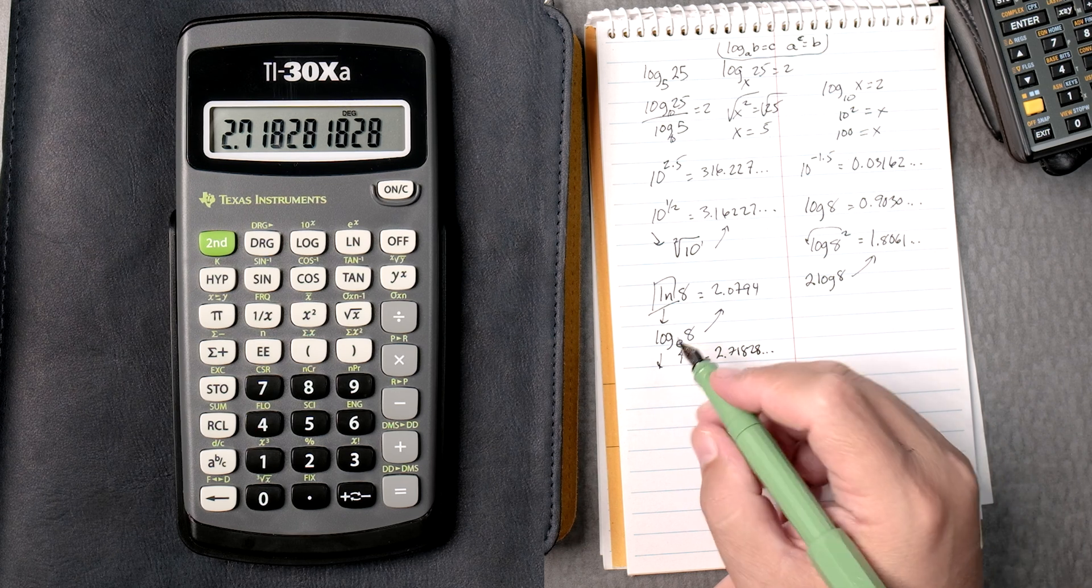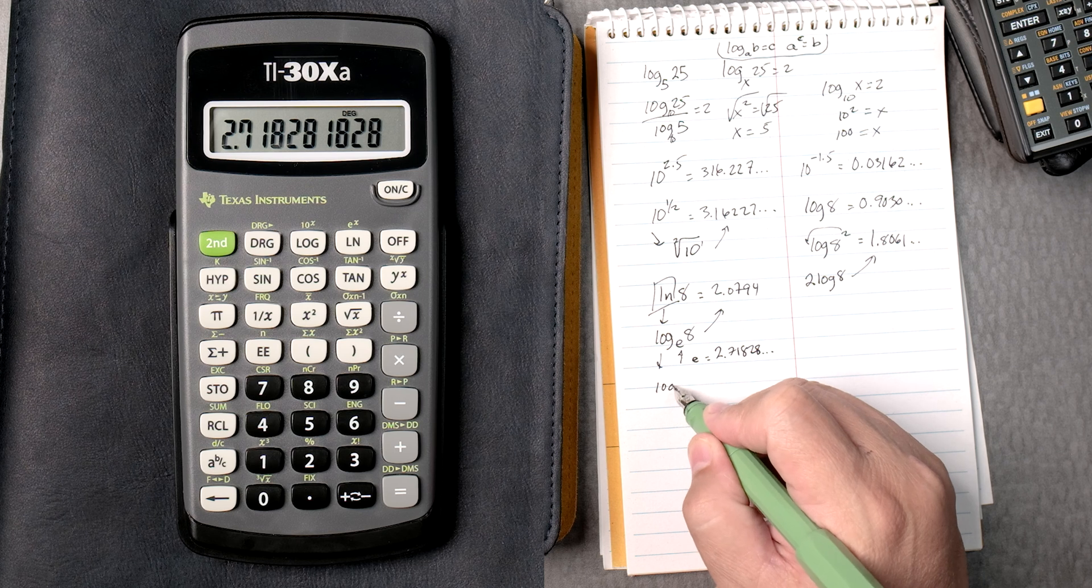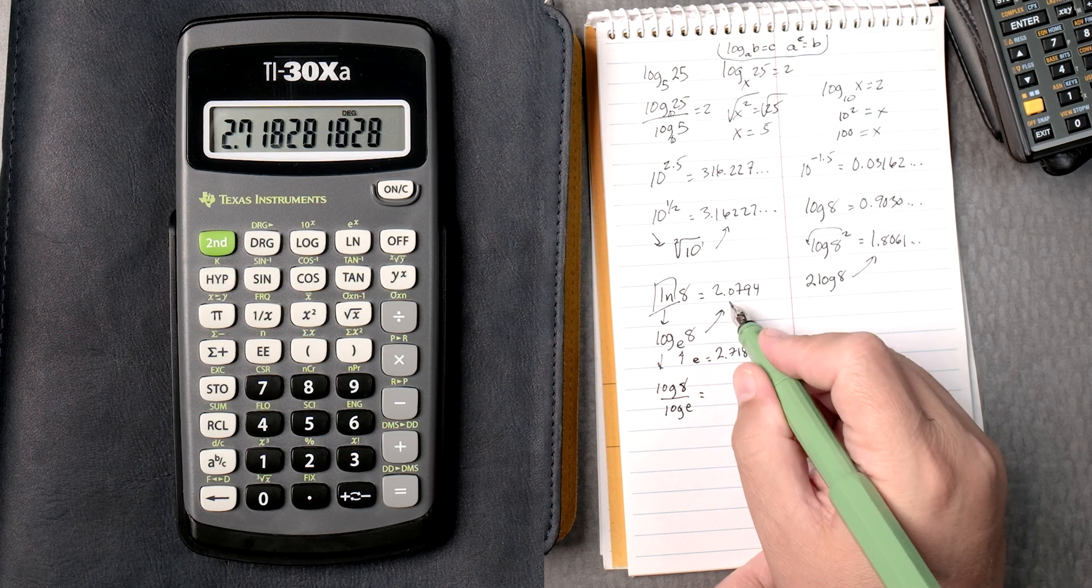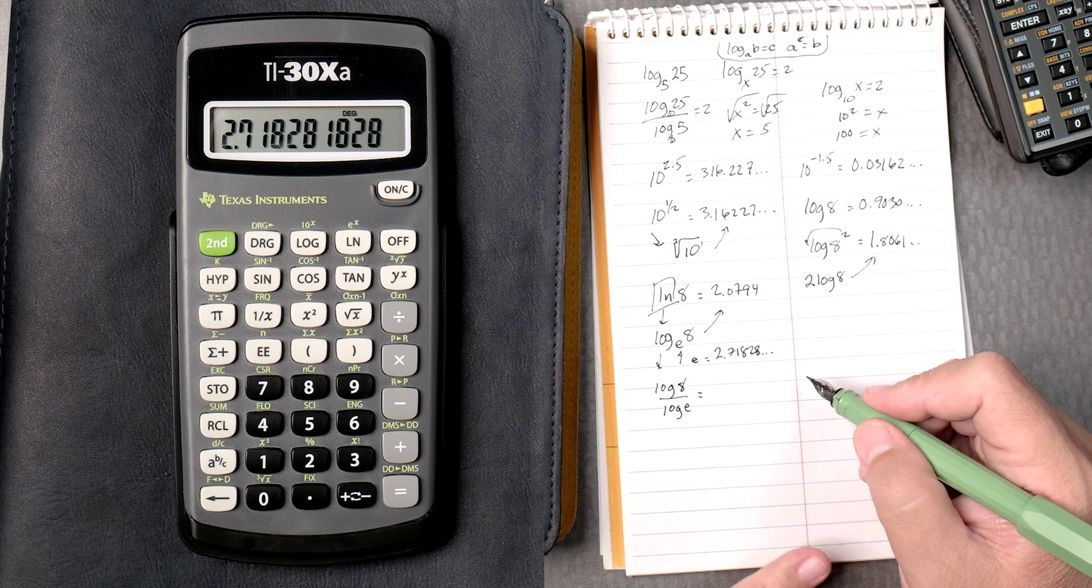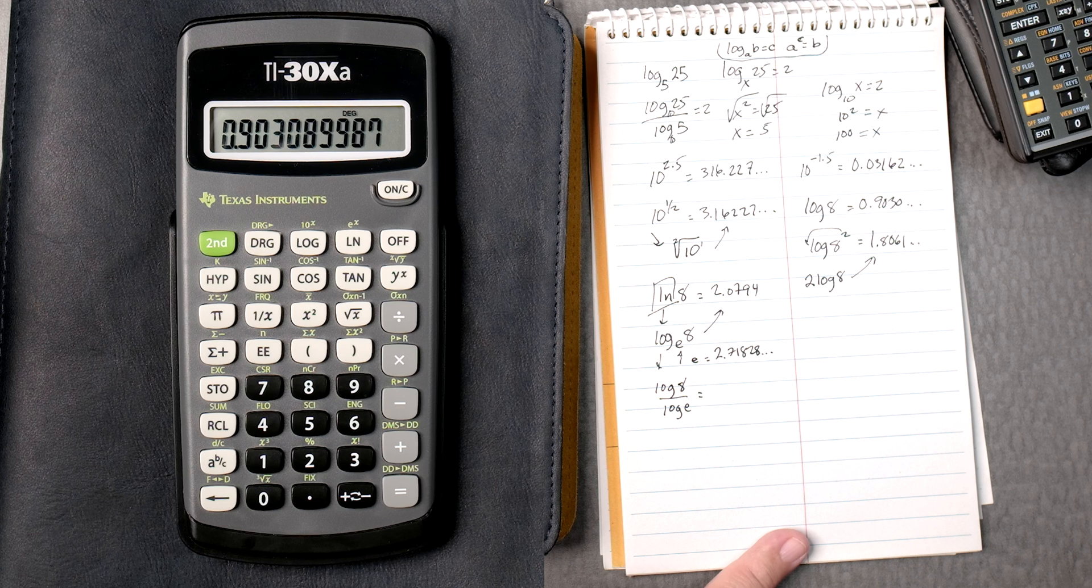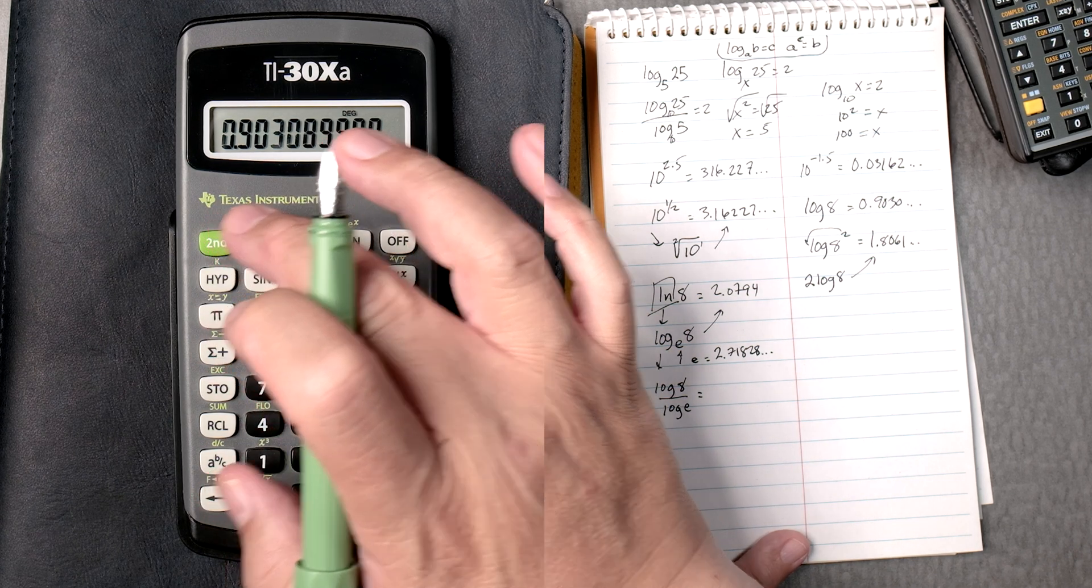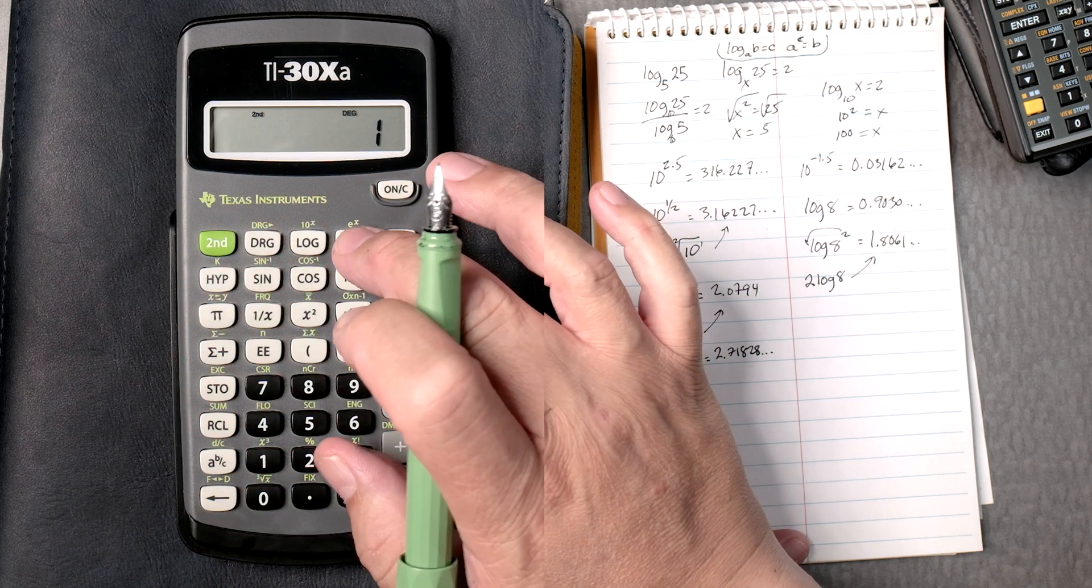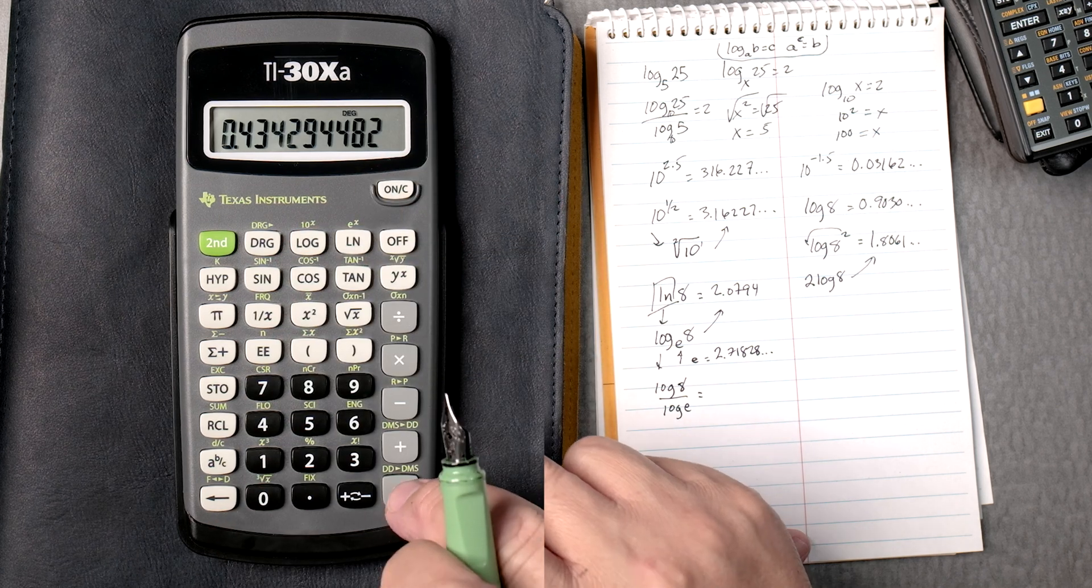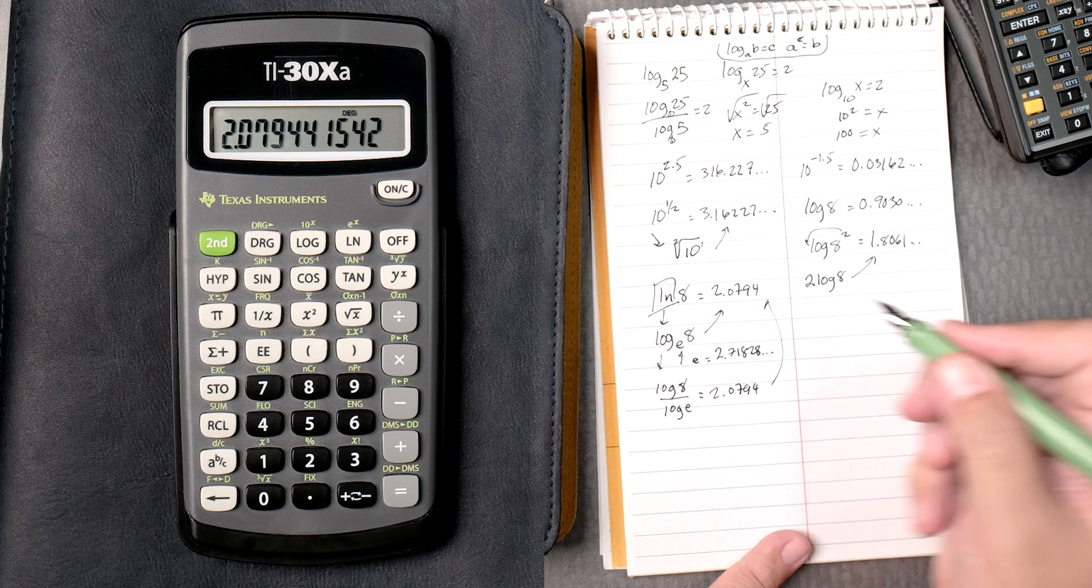So what you can do is you can calculate log base e to the 8. Log of 8 divided by the log of e should give you the same answer. How do we do that? Well, we can type in 8 log for the top, divided by, then we're going to have to have e, so we're going to have to type 1 e. And we take the log, and then we press equals, and 2.0794, same answer.